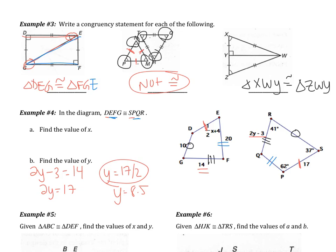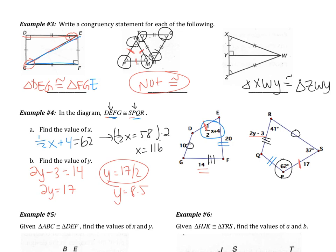To find X, I need the angle congruent to angle E, which is labeled ½X + 4. From the congruency statement, angle E (second position) is congruent to angle P. Angle P is 62 degrees. So ½X + 4 = 62, giving ½X = 58, and multiplying both sides by 2, X = 116.